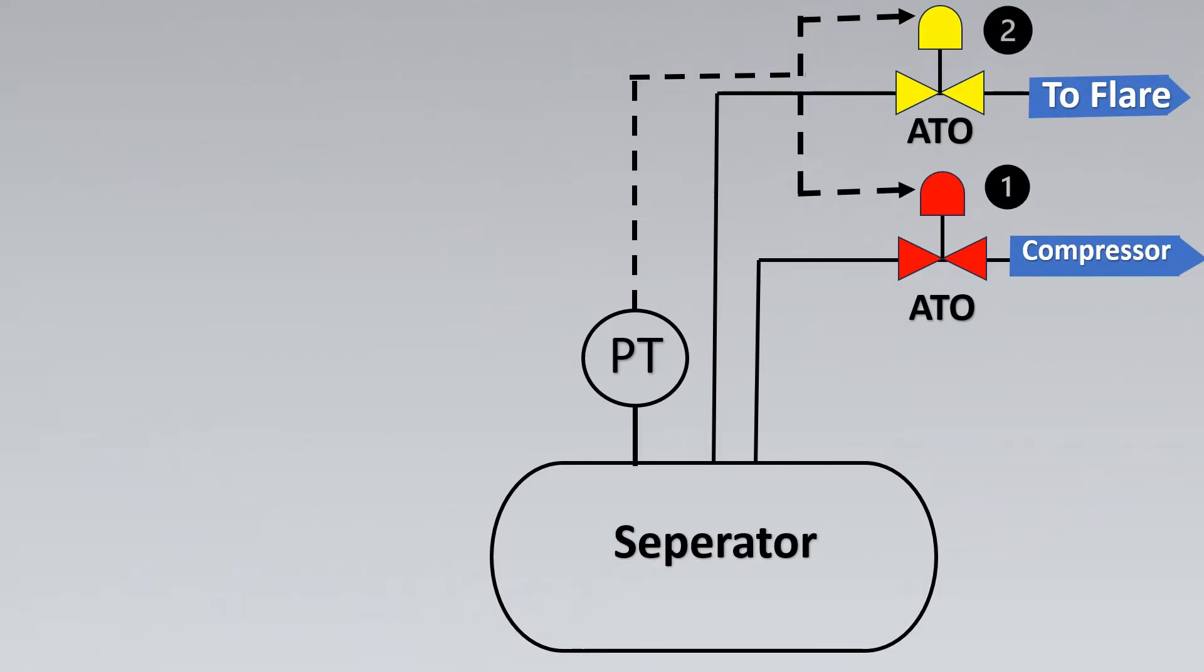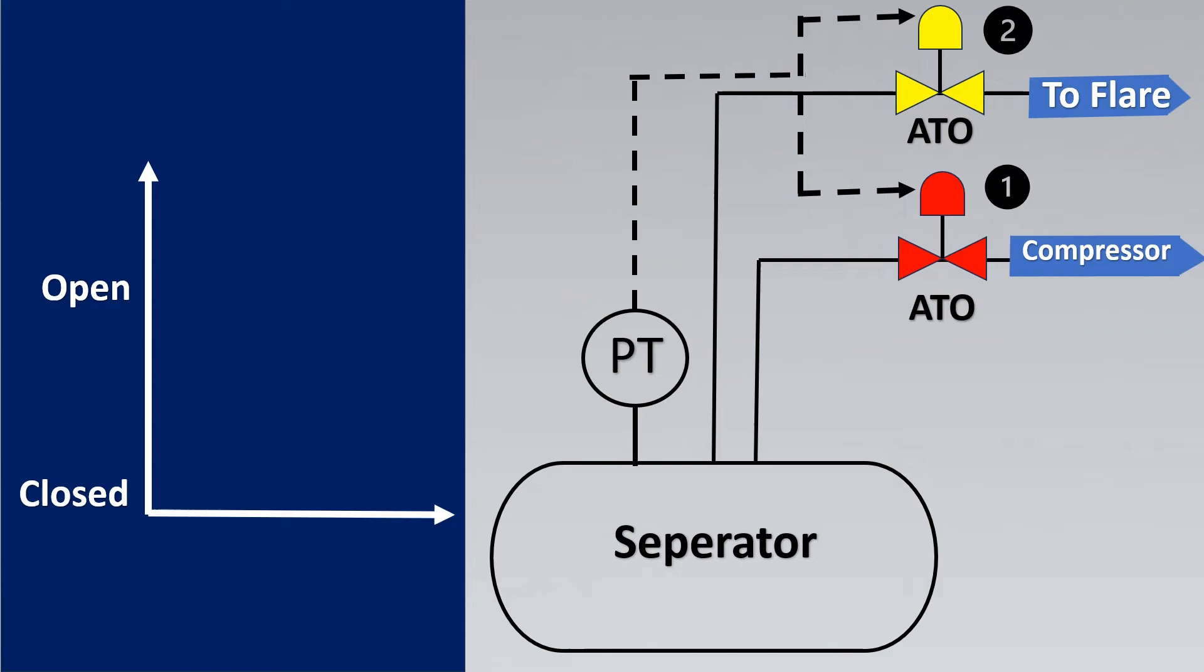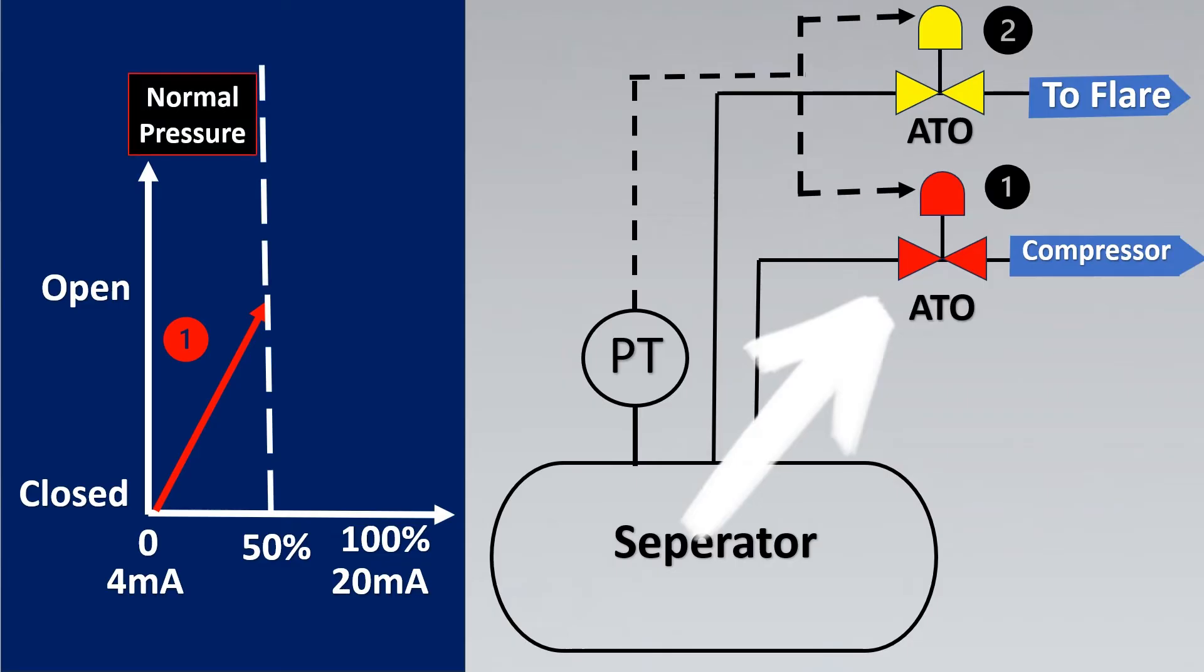Now let us look at what happens in the control system. If you look here for example let us have on the y-axis the closed and open position and x-axis the output of pressure transmitter. Let us have the 50% line here to understand it. So now valve number 1 is going to initially start from closed position to open position when the pressure increases. At 50% valve 1 will be completely open and all the gas will go to compressor. So this is basically your normal pressure usual application.